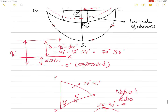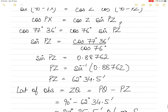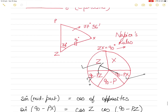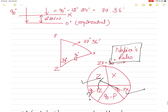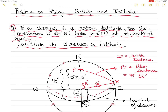The assumption from the diagram is that the observer is north of the equinoctial, so the latitude would be north. However, the question gives no explicit hint about hemisphere, so the answer could be north or south — 27° 25.5' N or S. Key takeaways: theoretical rising means ZX = 90°; bearing gives angle Z; polar distance = 90° minus declination; solve using Napier's Rules for a quadrantal spherical triangle.